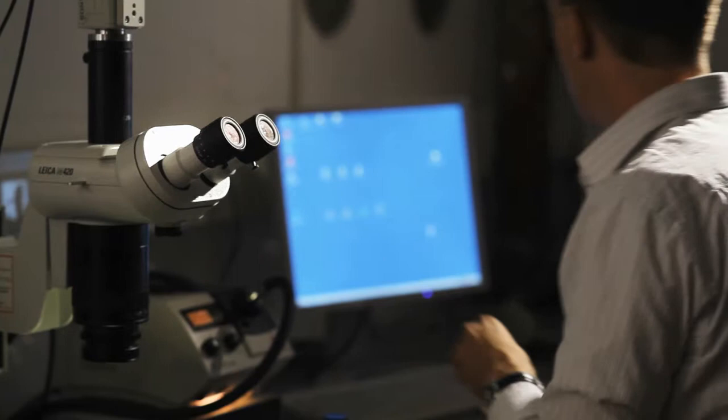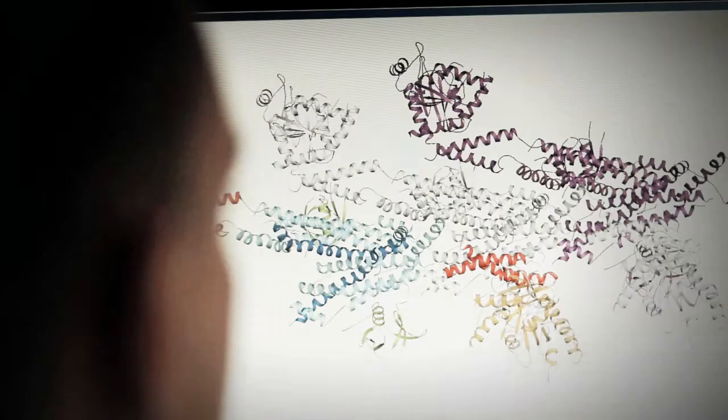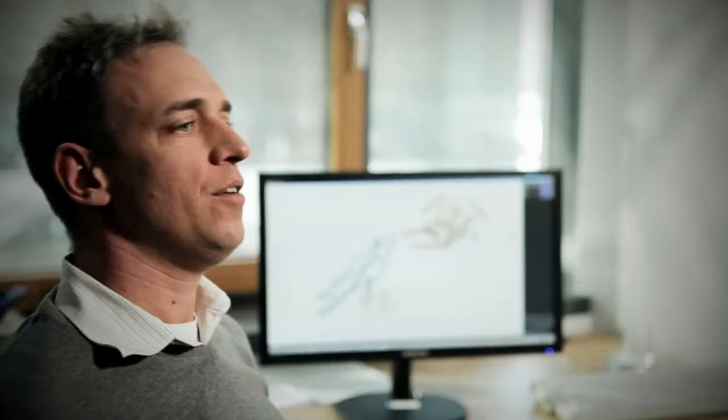Proteins are too small to be observed under the microscope. That's why Oliver Daumke crystallizes them and with the help of x-rays he can then examine their structure. This is how Daumke and his team discovered the structure of the protein dynamin for the very first time.